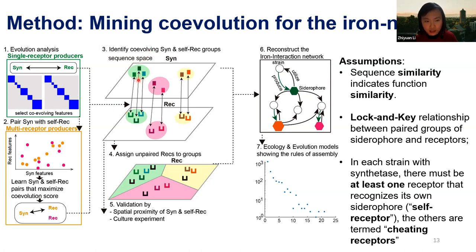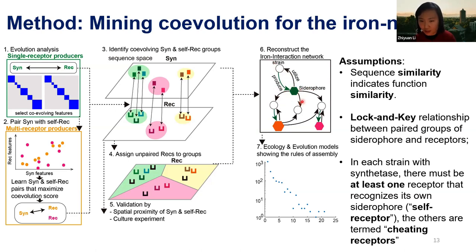For example, we find that certain synthetases can be recognized by certain receptors. By sequence similarity, we can assign unpaired receptors to each group and then predict from the genomes: which subtype of siderophore a strain makes, and which subtypes a strain could eat. Using siderophores as intermediaries, we can infer how strains interact with each other and use network dynamic models to understand how they evolve.